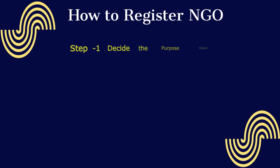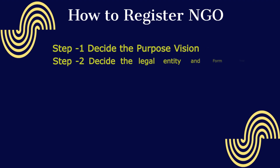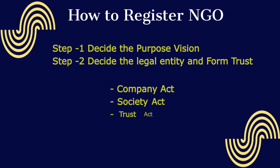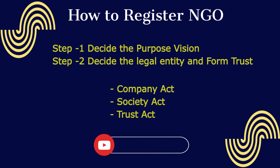To register an NGO: Step 1 — decide the purpose and vision. Step 2 — decide the legal entity and form, choosing between the Companies Act (Section 8), Trust Act, or Society Act.